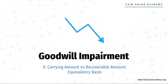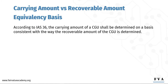In this session, we will cover the carrying amount versus the recoverable amount in relation to the equivalency basis, also known as the apple-to-apple basis. According to IAS 36, the carrying amount of a CGU shall be determined on a basis consistent with the way the recoverable amount of the CGU is determined. As the goodwill impairment assessment is carried out by comparing the carrying amount of the CGU to the recoverable amount of the CGU, we need to ensure that the carrying amount and recoverable amount are on the same basis. In practice, we say apple-to-apple basis.